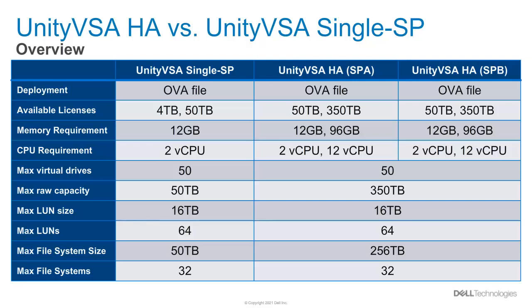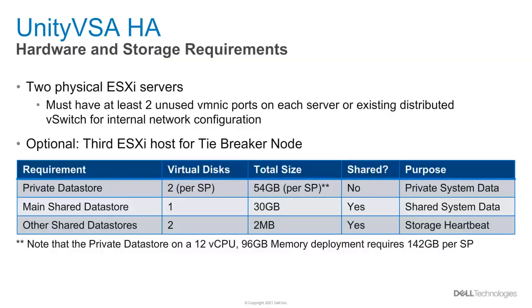Likewise, the 12 CPU and 96GB memory options are only available for Dual SP. For a full list of system limits, see the Unity support matrix on the Dell Technologies product support page.